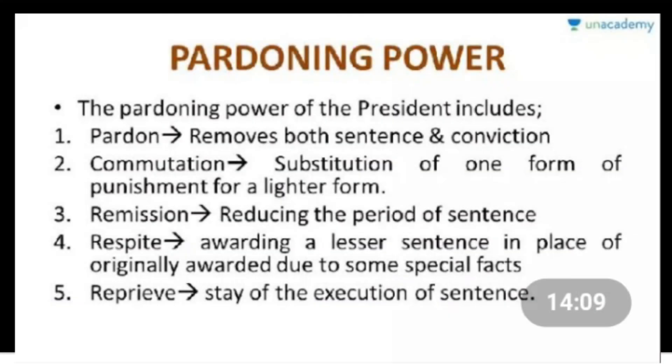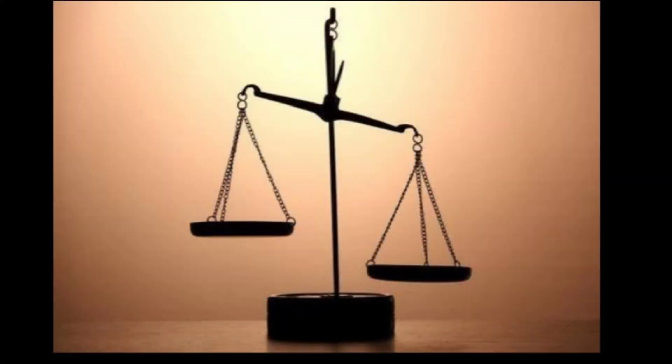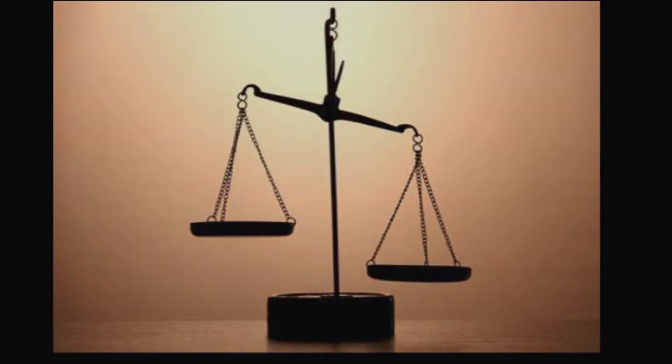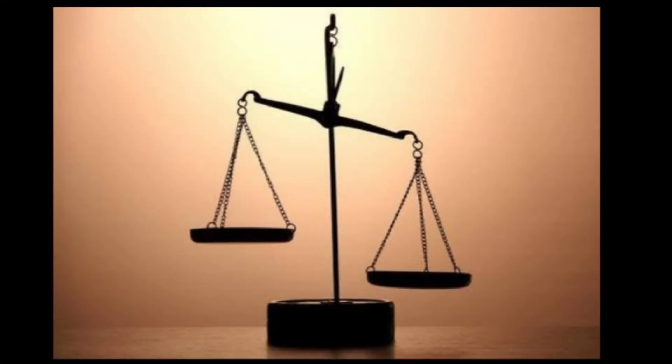There are five different types of pardoning mandated by law: pardon, commutation, reprieve, respite, and remission. Number one — Pardon: the President can completely remove the punishment of the convicted person, and he will be treated like a normal citizen. Number two — Commutation: the President can change the type of punishment given to the convicted person; for example, he can change a death penalty into a life sentence.